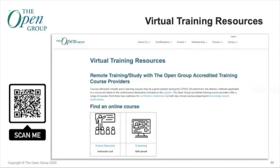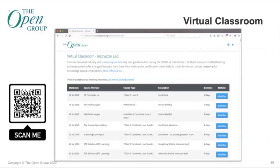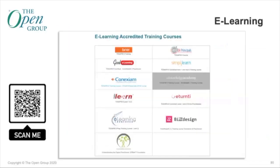All of the Open Group accredited training course providers are able to deliver their courses as virtual instructor-led courses, and some provide e-learning courses. We have a number of resources on our site to make it easy to locate training, including a link you can scan via QR code. We also have a calendar where you can search for different types of courses — including virtual classroom-led — and links to e-learning courses.